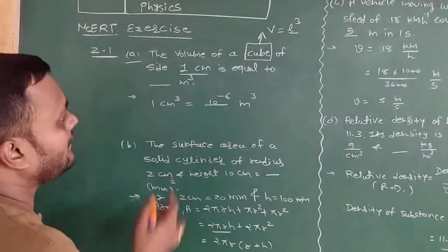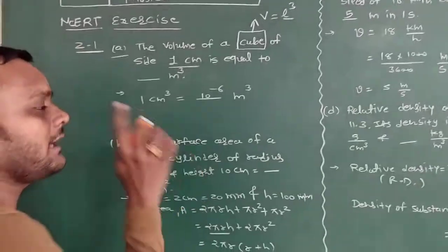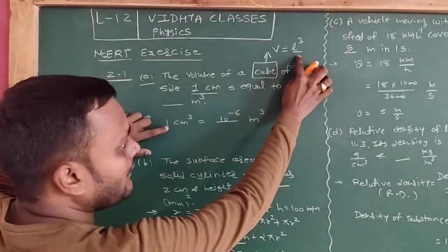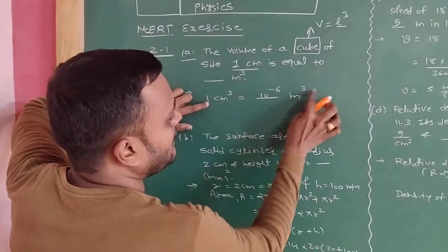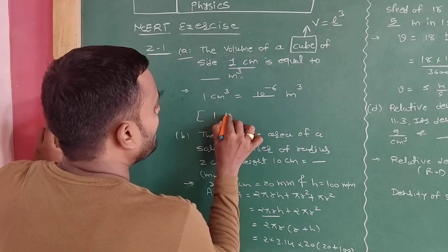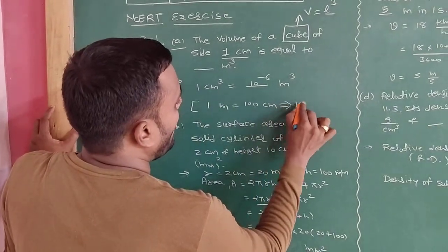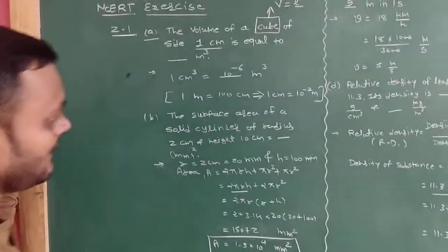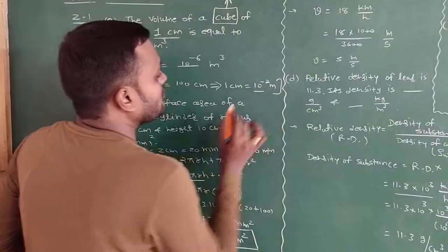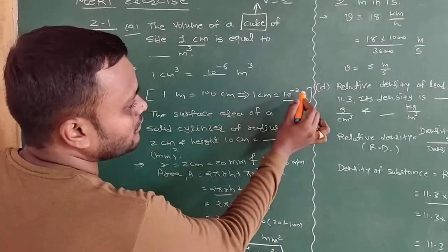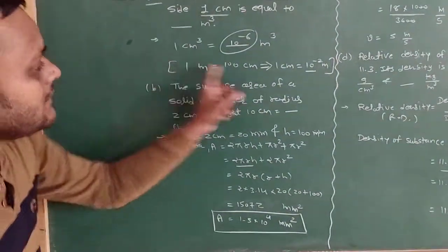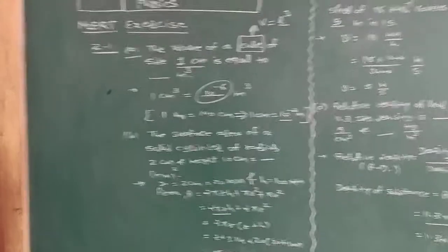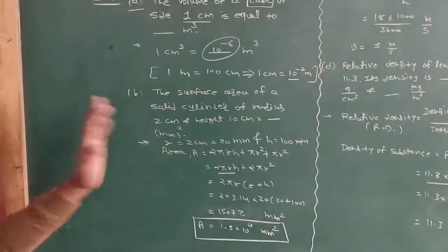Length is given in centimeter and we have to calculate the volume in meter cube. Which value is given? One centimeter. Volume of cube: V equal to L cube. So one centimeter cube equals blank meter cube. You know the formula: one meter equals hundred centimeter. That implies one centimeter equals 10 raise to minus 2 meter. Since we are cubing, the power becomes 3 into minus 2, which gives 10 raise to minus 6. So the answer is 10 raise to minus 6 meter cube. This is your answer for question 2.1 part 1.